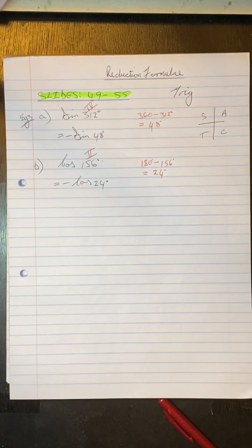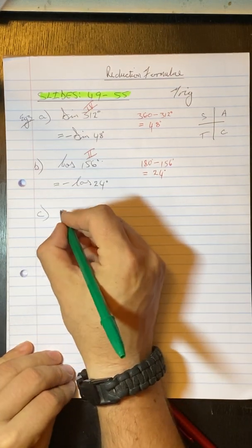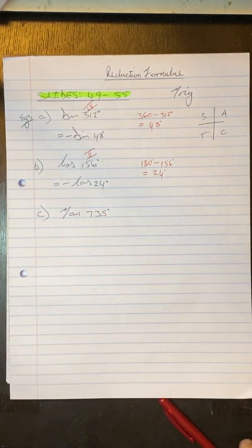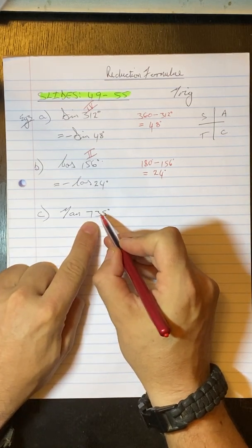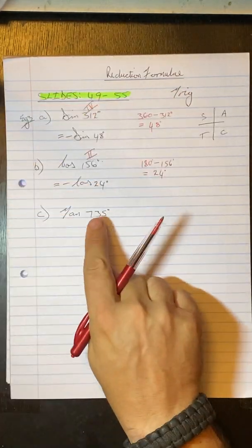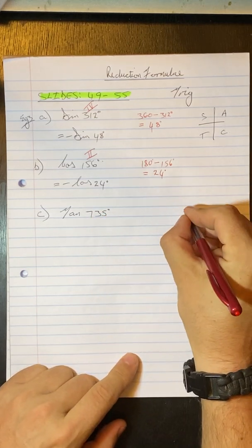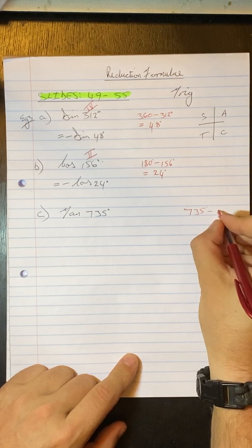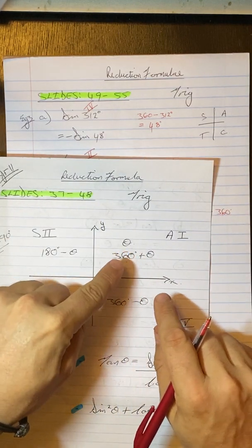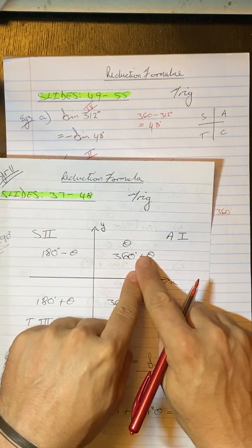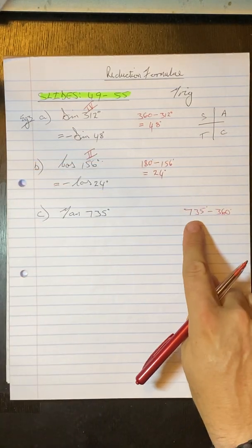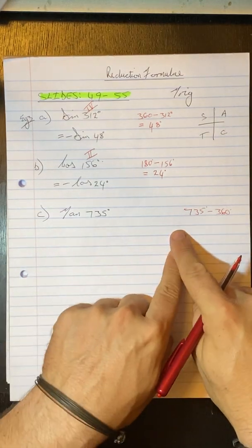So the next one is question C and it is tan 735 degrees. So here we have an angle greater than 360. Now our things only go up to 360 degrees. Okay we only know that up to there. So what I do with something like this is I take the 735 and I subtract 360 from it. Okay. So if you have a look here. I've got some angle and if I subtract 360 from it all I'm doing is I'm subtracting a full circle from it. So it'll still be at the same position. Subtract another 360 and you see we're still getting to that same position. So I'm not actually changing the degrees. I'm just changing the number of revolutions.